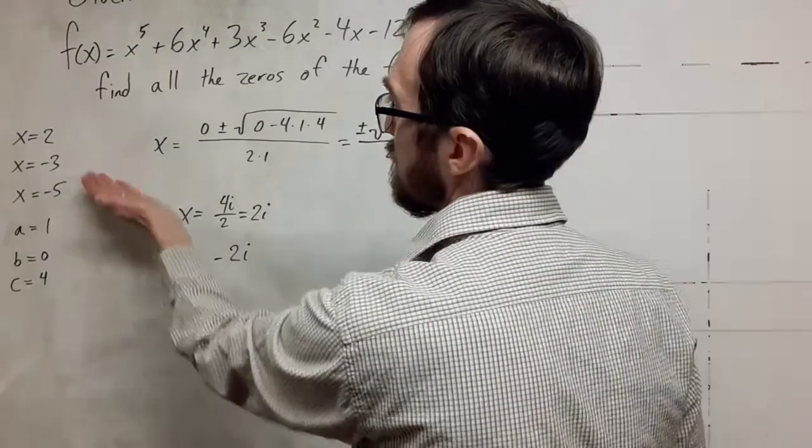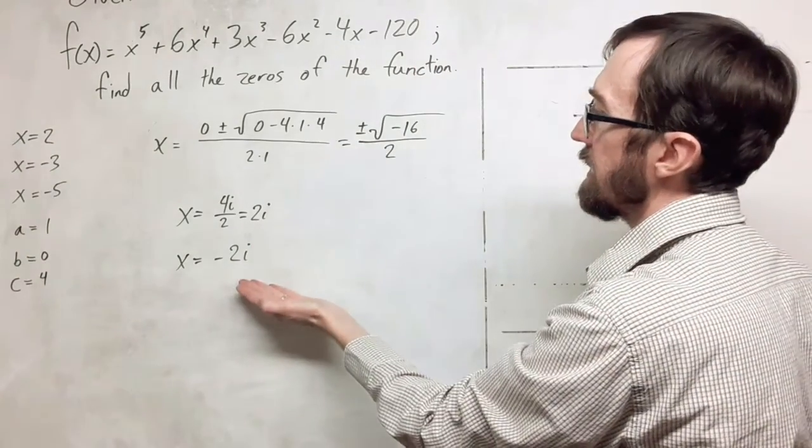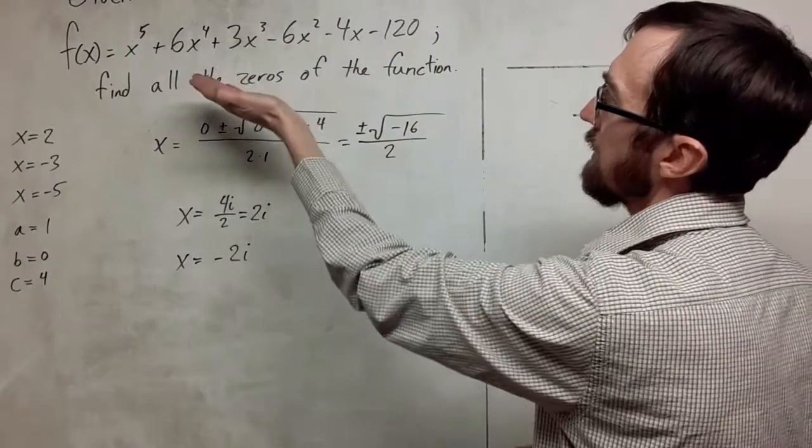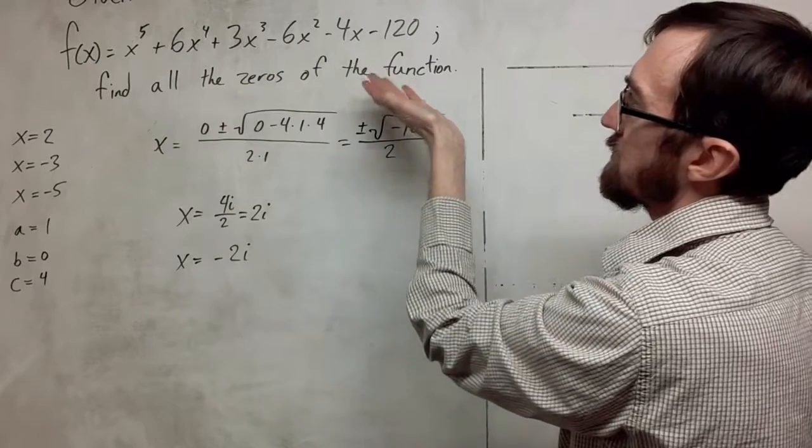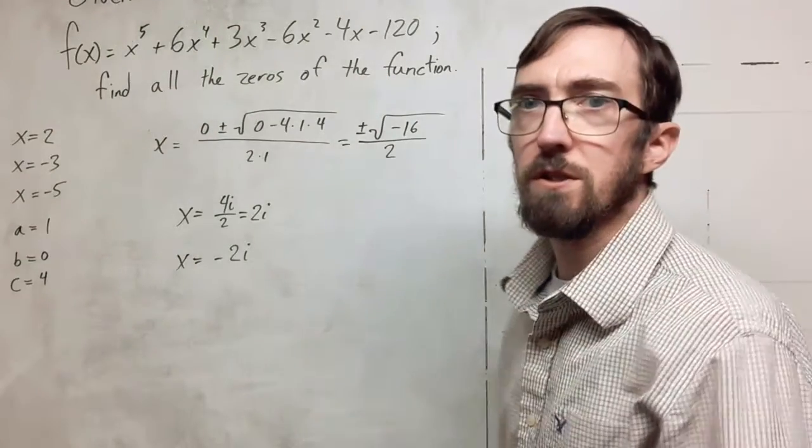So we have 2, negative 3, negative 5, 2i, and negative 2i are the 5 x values that will give us a 0 for this function.